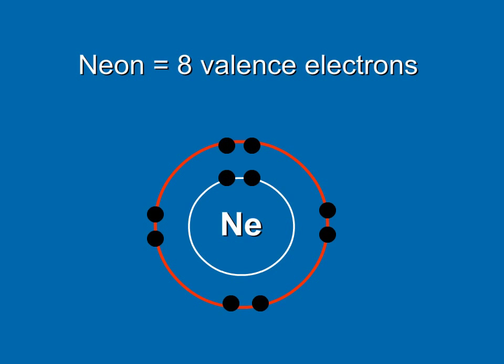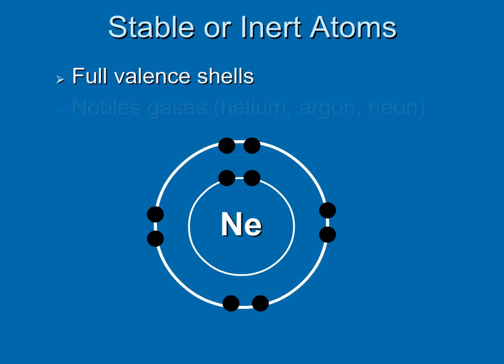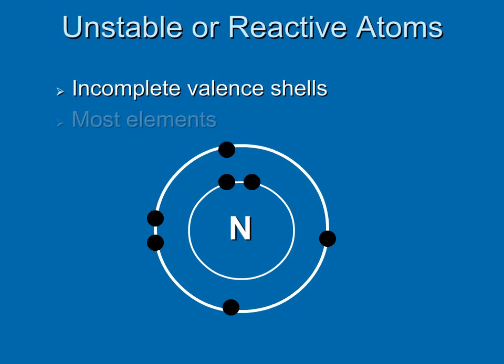The noble gas neon has eight valence electrons. It does not need to react with any other atom to fill its valence shell. In fact, all the noble gases in the last row of our periodic table have full valence shells. We call them stable or inert atoms, as they are not reactive. But most atoms do not have full valence shells and must react with other atoms to achieve stability. As you can see, nitrogen does not have a full valence shell. How many electrons does it need to be stable? Right, it has five valence electrons. So nitrogen needs to react with another atom, or atoms, to obtain three more electrons.